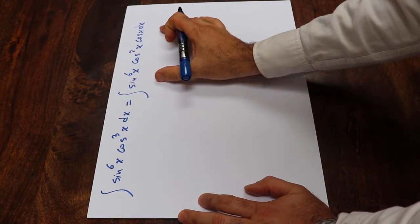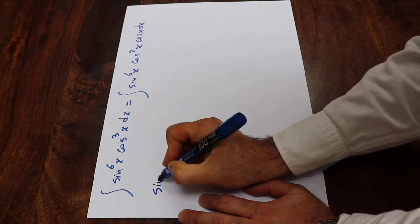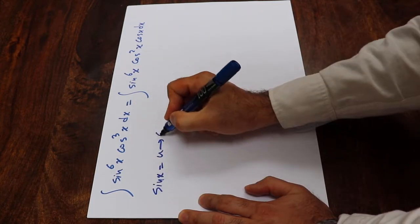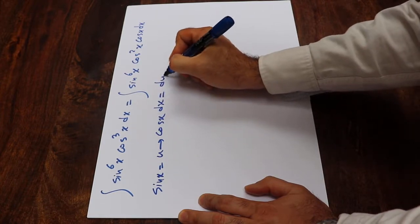This integral you can solve using the substitution rule. So if you define sine x as u, therefore cosine x dx will be equal to du.